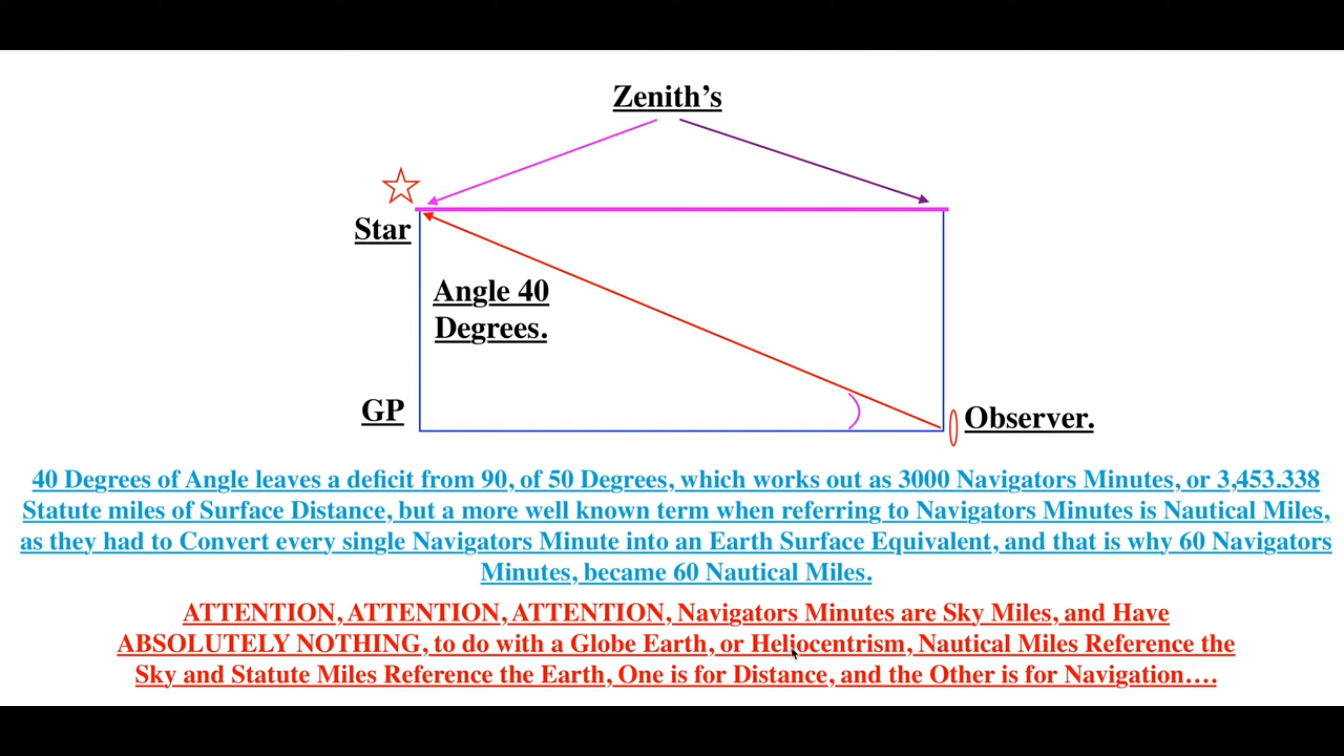One is for distance, statute miles, and the other is for navigation. Nautical miles are navigator's minutes.